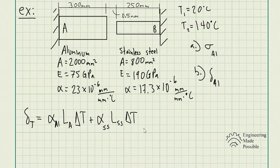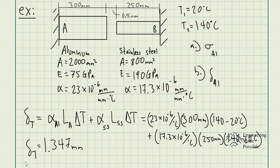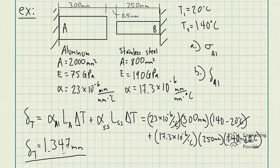Plugging in and solving, we get a total thermal deformation of 1.347 millimeters. For the temperature difference, always use T2 minus T1 — final minus initial. After solving and canceling units, the total deformation due to thermal expansion is 1.347 millimeters.